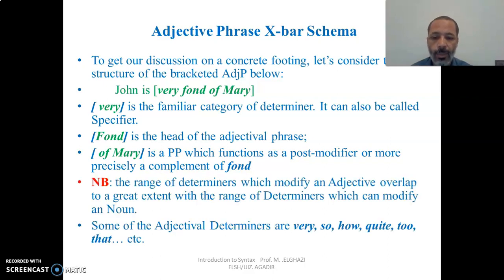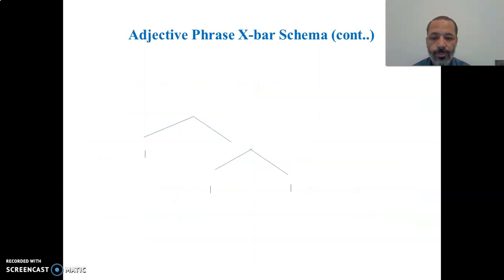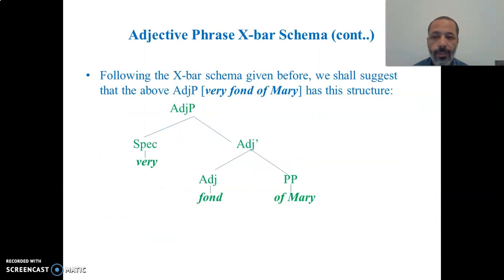A remark worth noting is that the range of determiners which modify an adjective overlaps greatly with those that modify a noun. Some adjectival determiners are: very, so, how, quite, too, that, and so on. Following the X-bar schema given before, we shall suggest that the adjective phrase 'very fond of Mary' has the structure described.